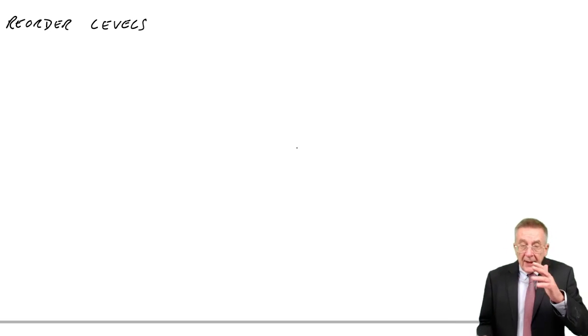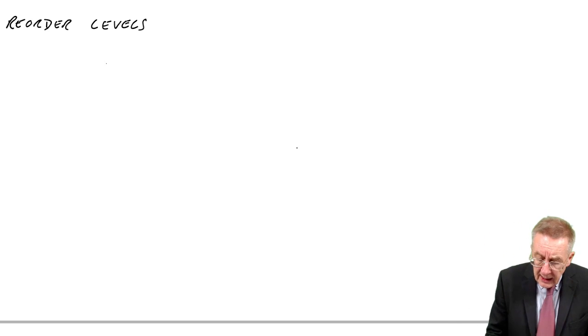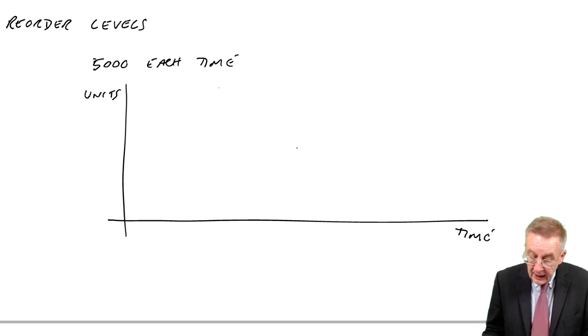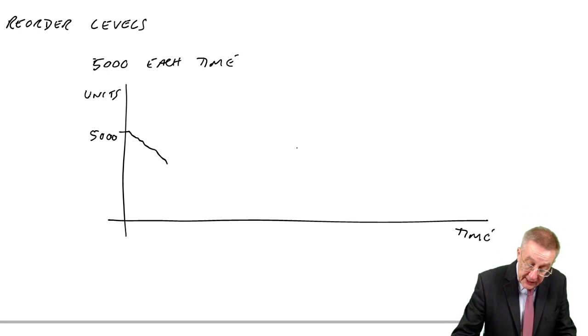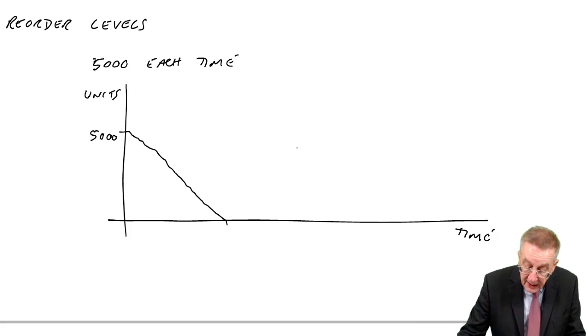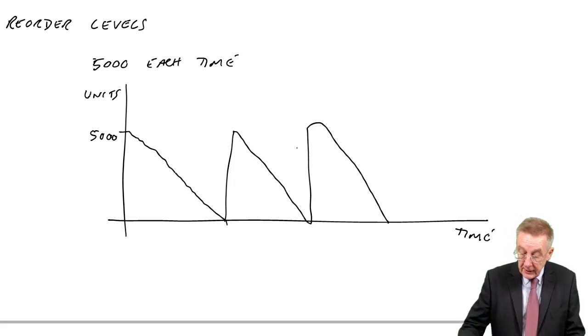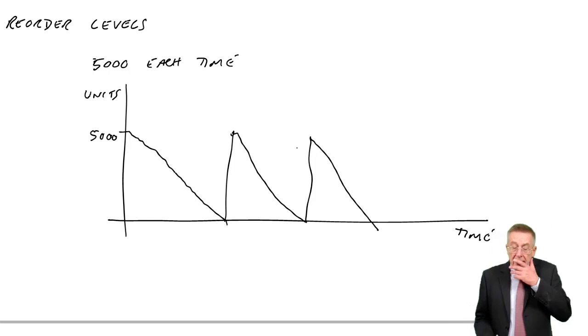What it relates to is this: if you think back to the earlier lectures on economic order quantity, if we were ordering, let's say 5,000 each time, I've drawn this little graph several times. If we looked at the level of inventory over time, we start with 5,000, customers are buying them so the level falls down to zero, then another order comes in at 5,000, then back to zero and so on. You've seen it enough times.